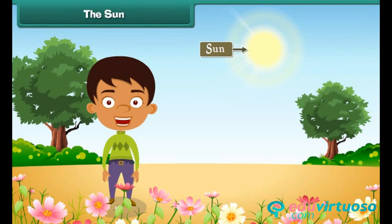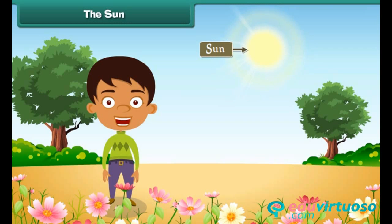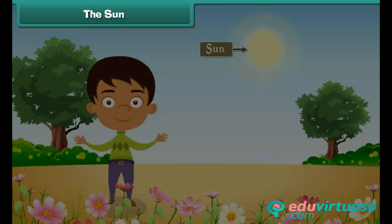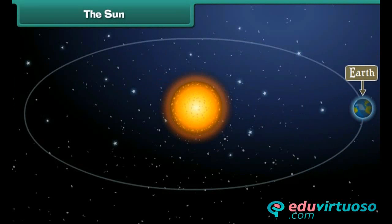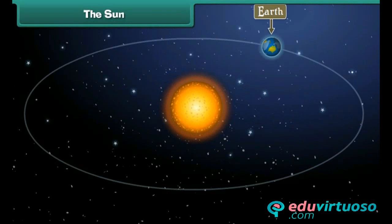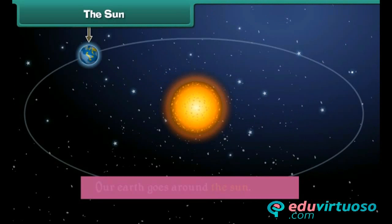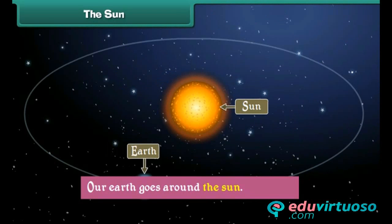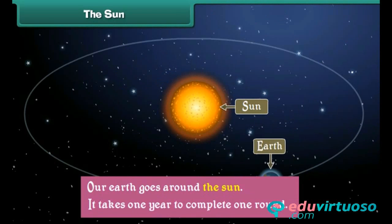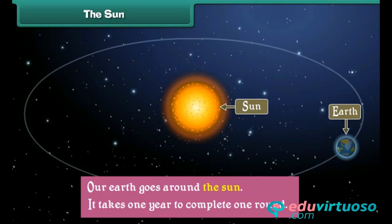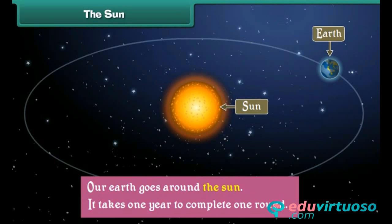The sun is a bright star. It is very hot and big. It is even bigger than our earth, but it appears small because it is very far away. Our earth goes around the sun, and it takes one year to complete one round.